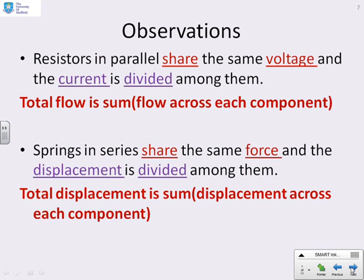So the observation, resistors in parallel share the same voltage and the current is divided among them. So the total current is the sum, is the keyword, of the currents across each component. So in this case, the sum is used on the current.